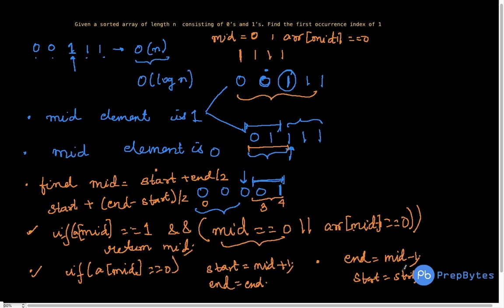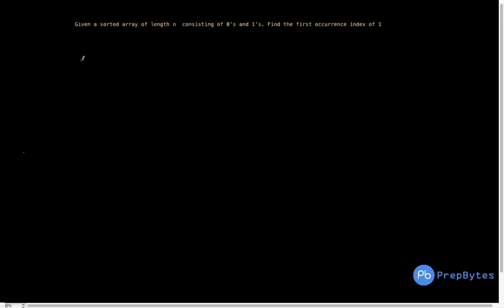Questions about the base condition and how start and end get updated are covered by binary search knowledge. If you're clear on binary search these questions shouldn't arise. Let's write down a generalized code first and then the implementation. The logic recap: we calculate mid, check if mid is the right index and return it, else decide based on the situation whether to search in the first or second half.